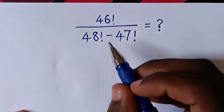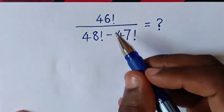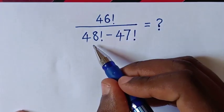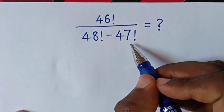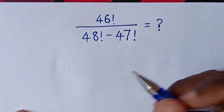Hello! How to solve 46 factorial over 48 factorial minus 47 factorial?